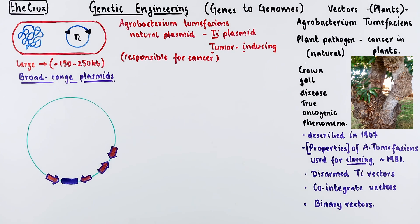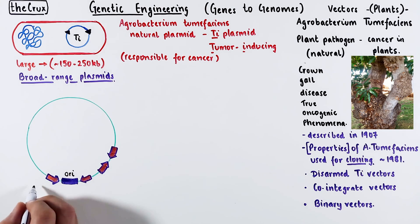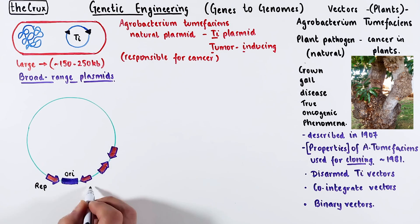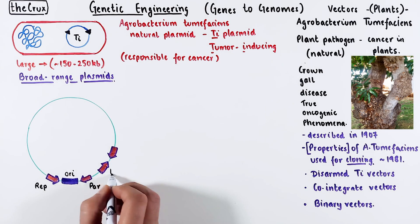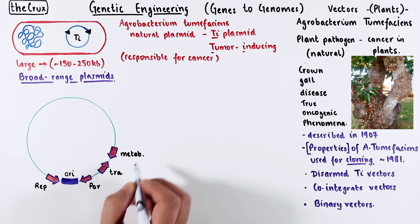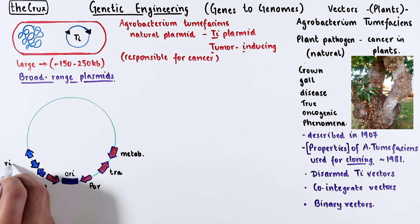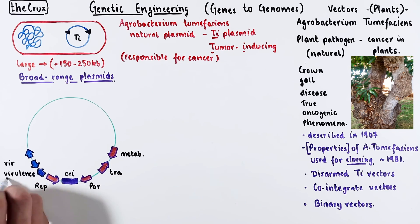If you have followed my previous videos on vectors, unsurprisingly, in the Ti plasmid you will find the origin with rep genes, partitioning genes, and transfer genes, and some general metabolism genes. In addition, there is a bunch of virulence-related genes.